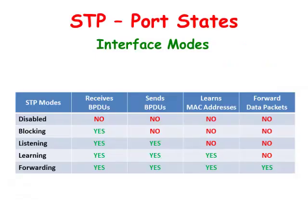By default, when a switch is connected to a device, the switch uses spanning tree to verify that the new connection will not lead to switching loops, by putting this interface port into blocking, listening, learning, and forwarding states. This normally takes around 30 to 50 seconds, in which the interface is unusable for general network traffic.